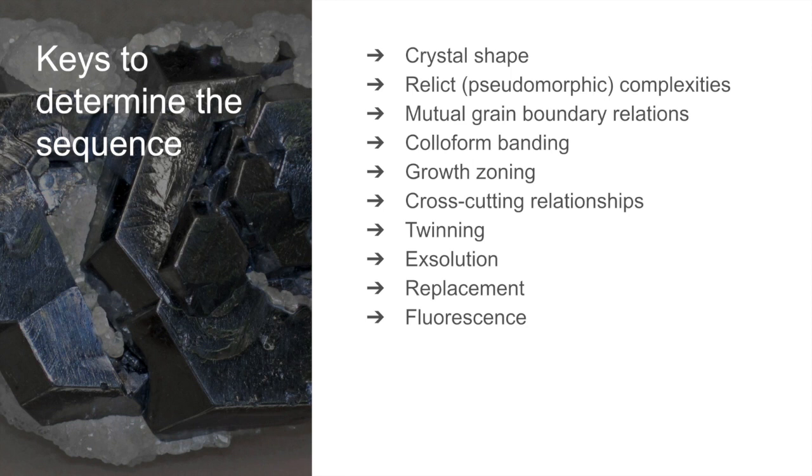There are around 10 keys of sequencing, namely crystal shape, pseudomorphs, mutual grain boundary relations, coliform banding, growth zoning, cross-cutting relationships, twinning, exsolution, replacement, and fluorescence.